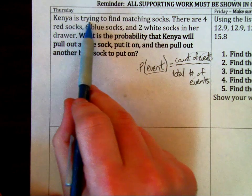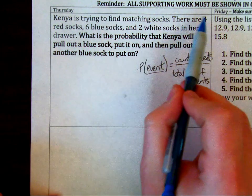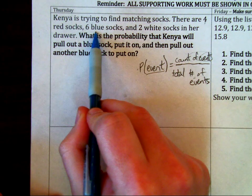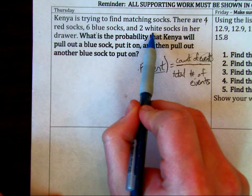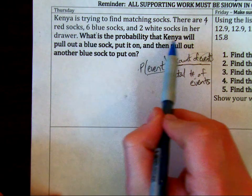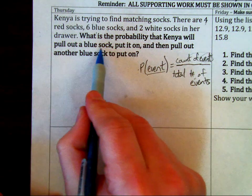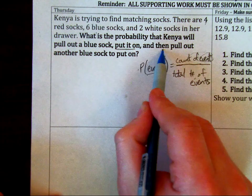It says Kenya is trying to find matching socks. There are 4 red socks, 6 blue, and 2 white. What is the probability that Kenya will pull out a blue sock, put it on, and then pull out another blue sock?